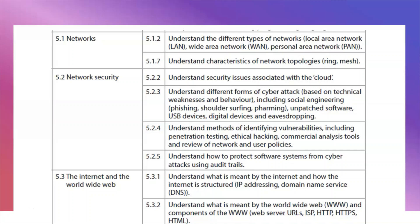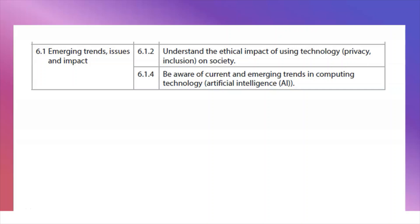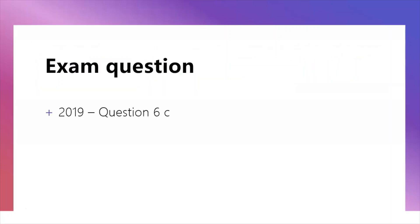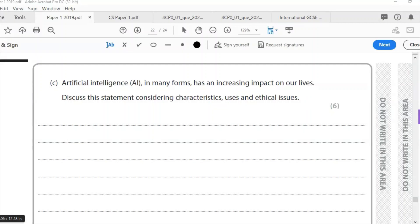Topic 6 is the last topic: emerging trends, issues and impacts. This is where you'll get your six-mark questions. There's a big focus on artificial intelligence and emerging trends, and also on privacy and inclusion. Looking at a 2019 question 6c exam question: 'Artificial intelligence in many forms has an increasing impact on our lives — discuss this statement considering characteristics, uses and ethical issues of AI.' You must address all three areas; going off-topic will not gain marks.